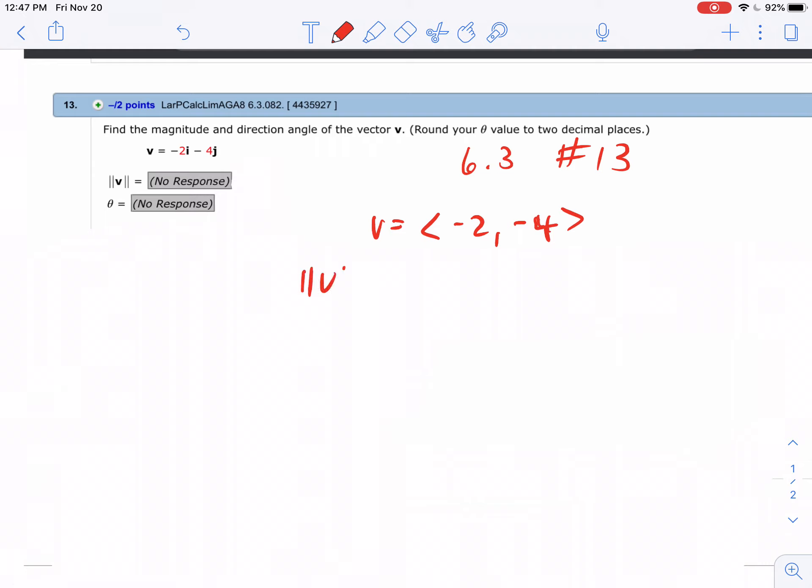So if I was going to do magnitude, I'd do the square root of negative 2 squared plus negative 4 squared. And so I'm getting 4 and 16, which is the square root of 20. WebAssign would take that, but this can be broken into 4 times 5. So 2 root 5 would be the better answer.